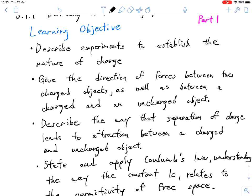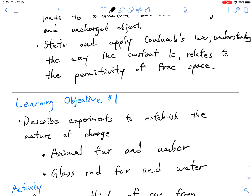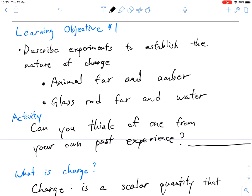So we've got four learning objectives today. I'm trying to change the style up a little bit to maybe make things easier by using more colors. Here's our first learning objective, which is to describe some experiments to establish the nature of charge.